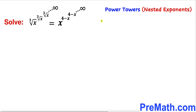Welcome to pre-math. In this video we are going to solve an equation that involves nested exponents, sometimes called infinite power towers. The equation is: the cube root of x, raised to the power of cube root of x, raised to the cube root of x, going to infinity, equals x raised to the power (4 minus x), raised to the power (4 minus x), going to infinity as well.